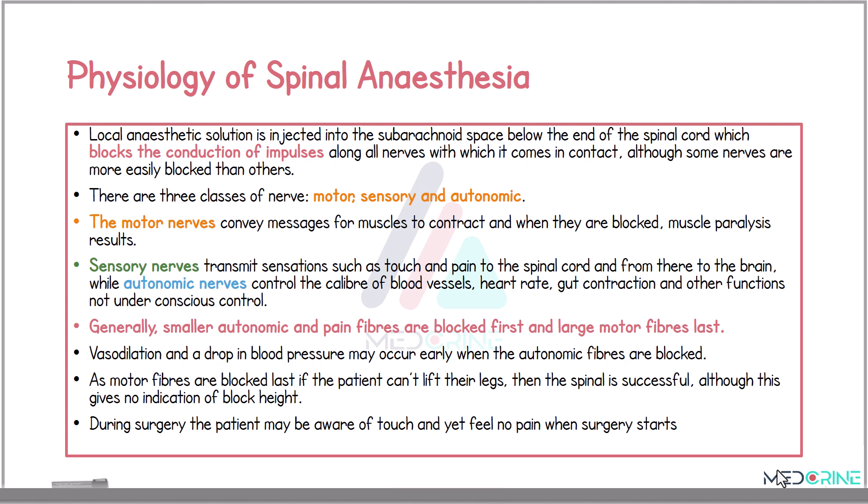On the other hand, sensory nerves transmit sensations such as touch and pain to the spinal cord and from the spinal cord to the brain. Lastly, the autonomic nerves control the calibre of the blood vessels, the heart rate, gut contraction, and other functions which are essentially not under conscious control.